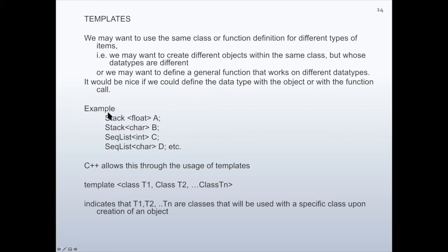For example, consider a Stack class. We can create object A of Stack type where the data stored is of floating type, and another Stack object B where the data stored is of character type. We may also define a sequential list C where data is integer type, and D is again a sequential list but data is character type.